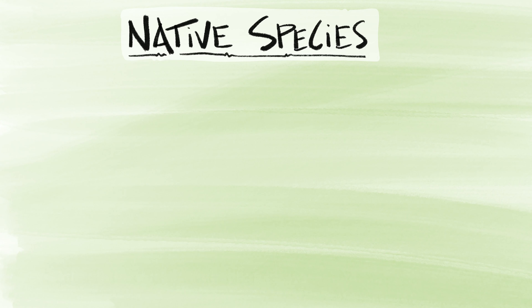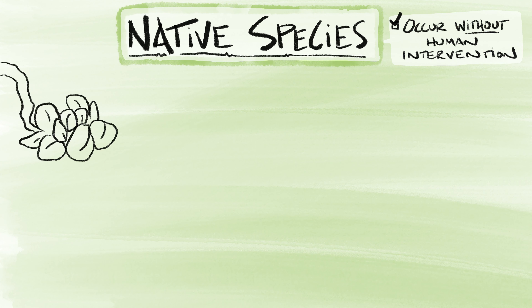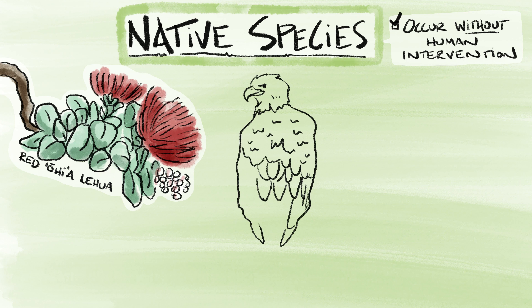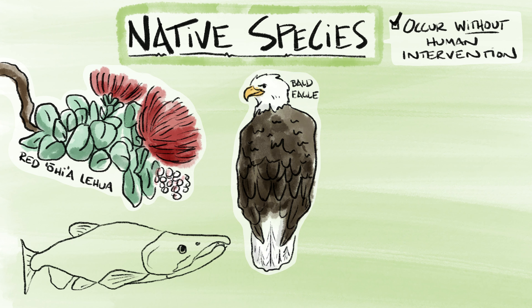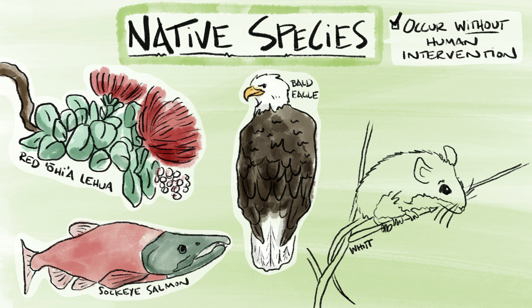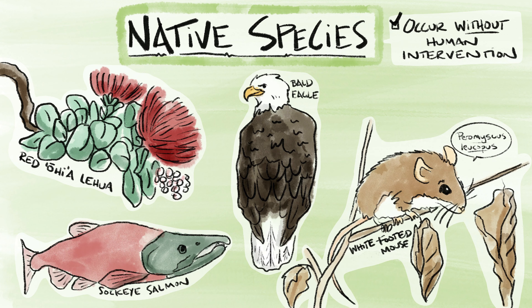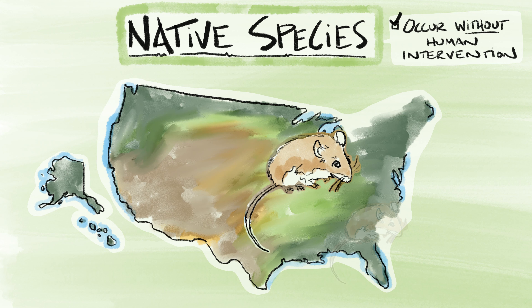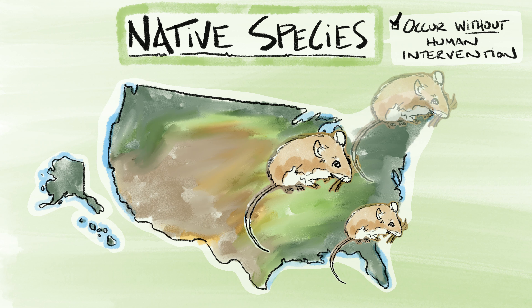Native species. These are all organisms that have occurred, now occur, or may occur without human intervention. One example is the white-footed mouse. It's native throughout the eastern United States. When found in nature, the mouse is an integral part of the ecosystem.